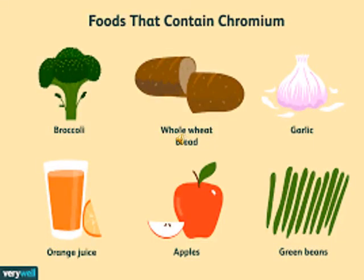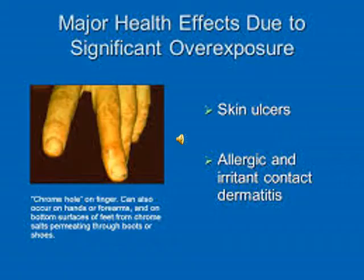Total body content of chromium is less than 6 mg. There is suggestive evidence that chromium plays a role in relation to carbohydrate and insulin function. Overdose of chromium results in skin ulcers, allergic and irritant contact dermatitis.